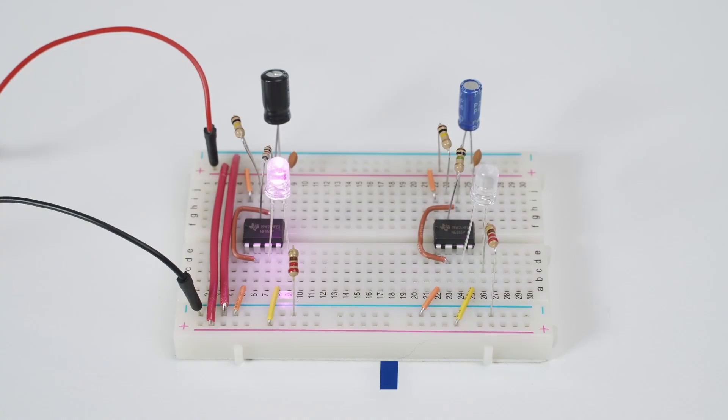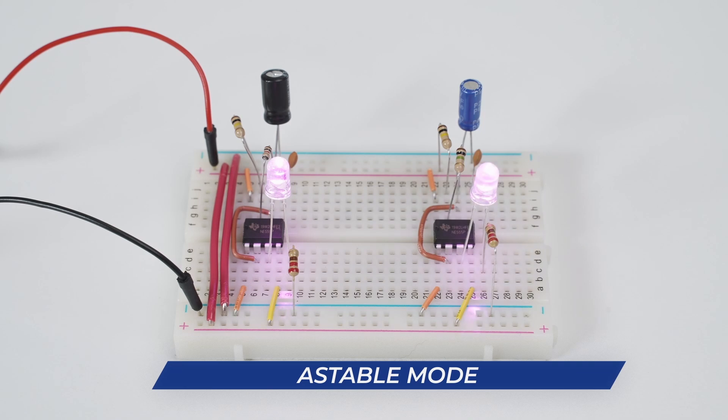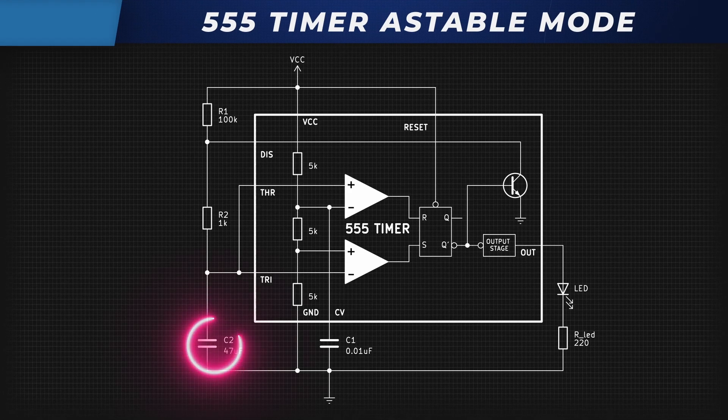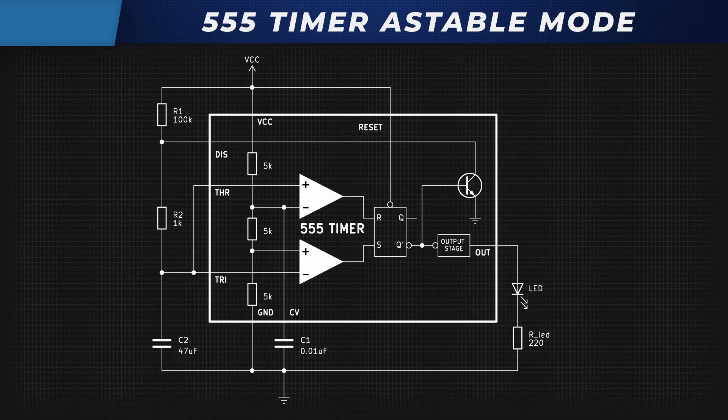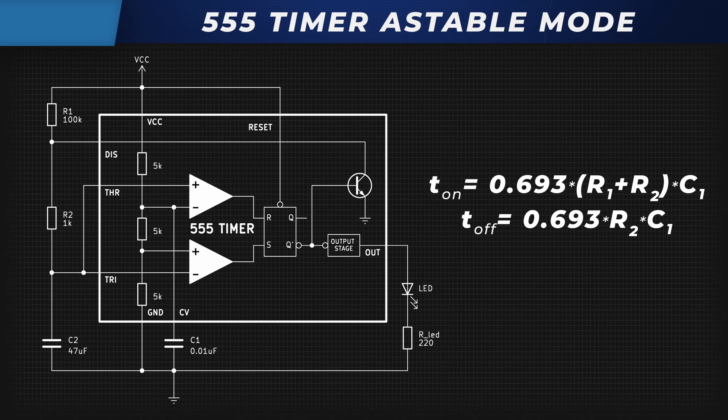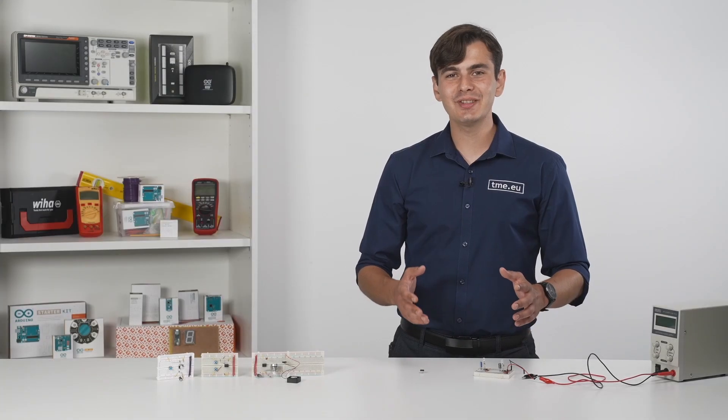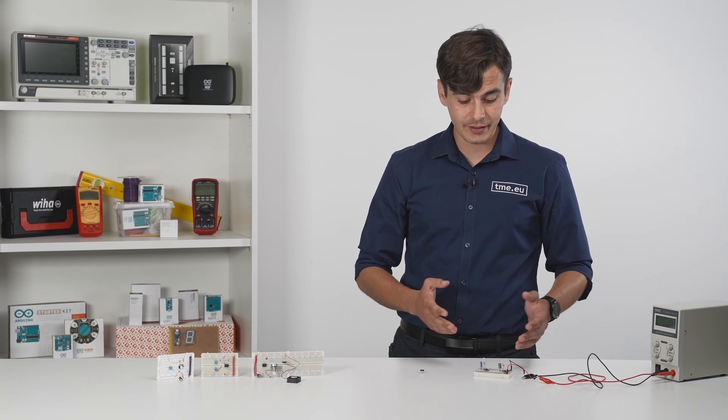The third and last mode is Astable. With this mode, you can make the 555 timer an oscillator and produce rectangular square waves with an adjustable frequency and even a duty cycle. In this circuit, capacitor C2 is charged through resistor R1 and R2 and is discharged through R2. So, on and off time can be calculated using these formulas. To give you an example, we decided to build two circuits with different RC components.